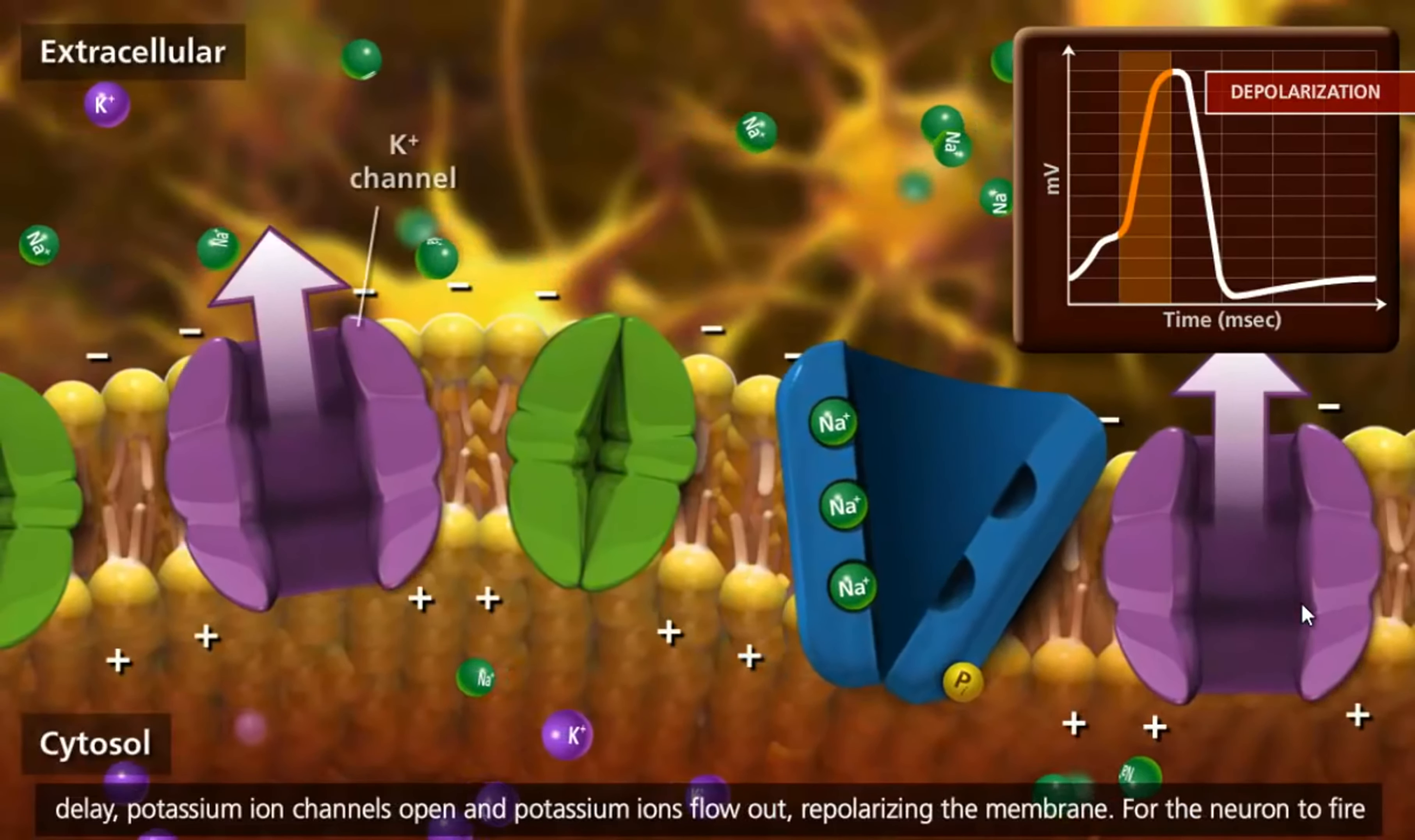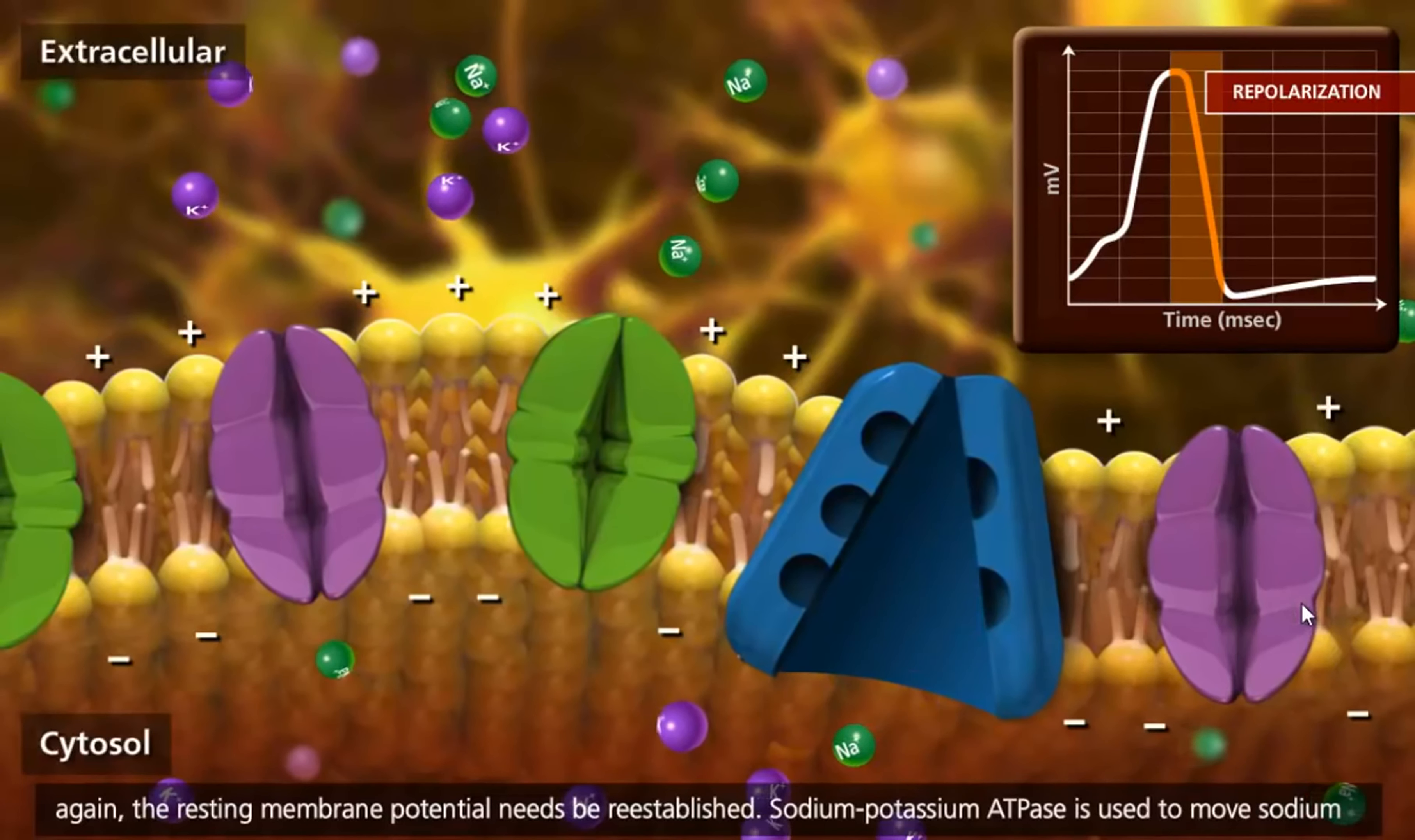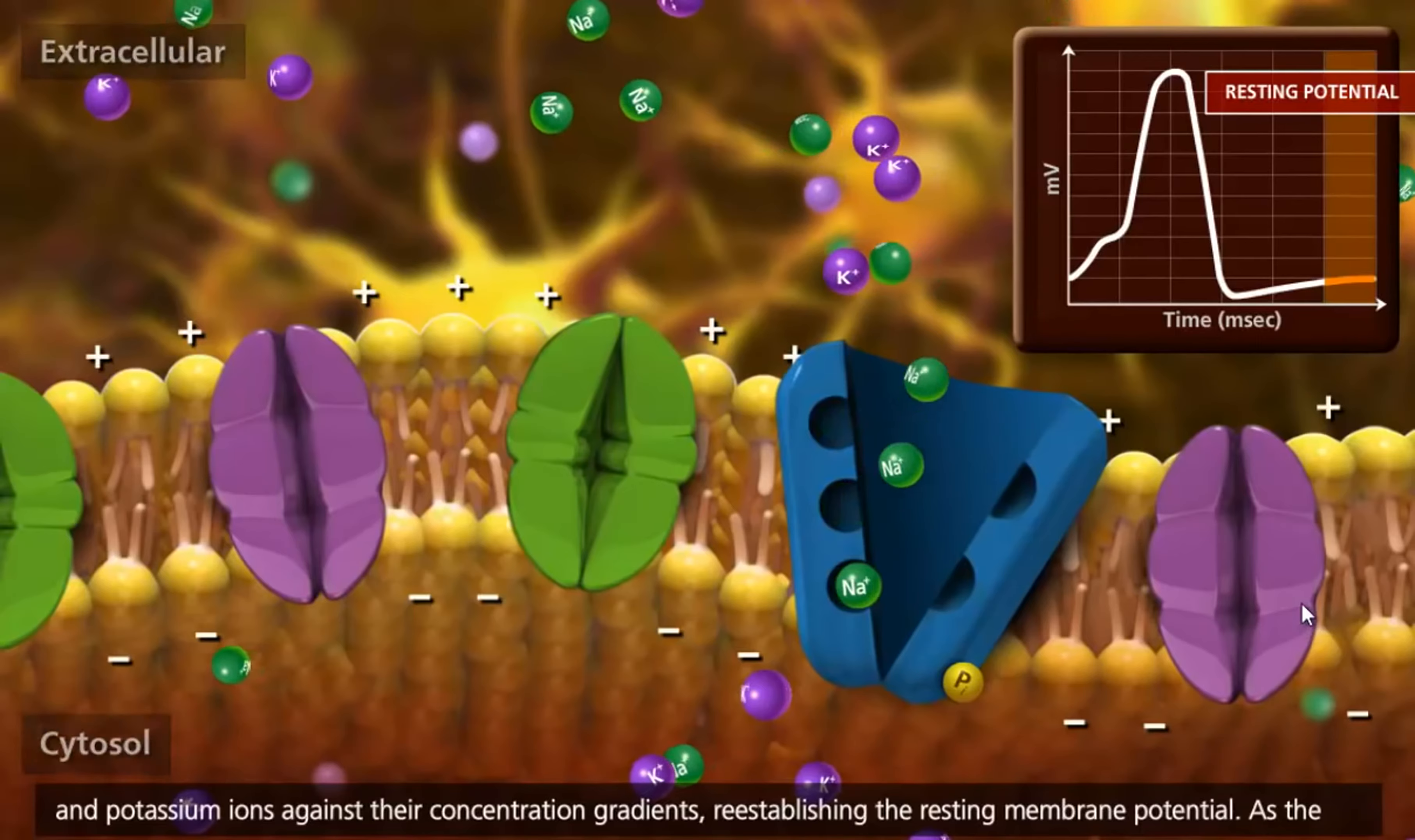After a short delay, potassium ion channels open and potassium ions flow out, repolarizing the membrane. For the neuron to fire again, the resting membrane potential needs to be re-established. Sodium-potassium ATPase is used to move sodium and potassium ions against their concentration gradients, re-establishing the resting membrane potential.